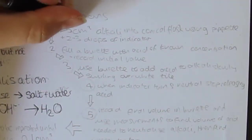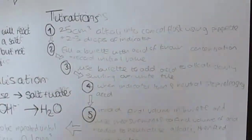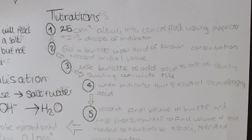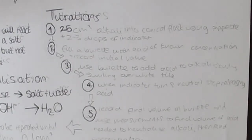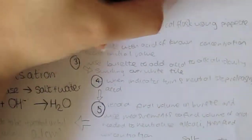Titrations allow you to find out what volume of acid and alkali can react together to neutralize each other. This can then be used to find the concentration of either the acid or the alkali. It is performed in 5 steps, but is usually a 6 mark exam question, so it is very important to understand as a required practical.